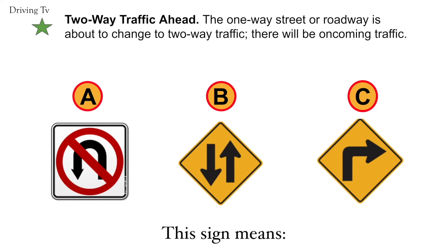Two-way traffic ahead. The one-way street or roadway is about to change to two-way traffic. There would be oncoming traffic. The correct answer would be B. Two-way traffic ahead.